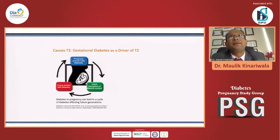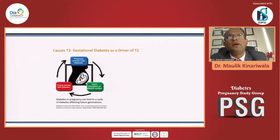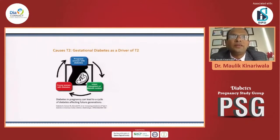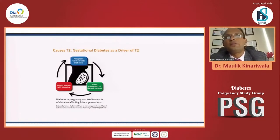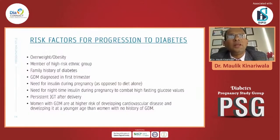Ultimately, GDM acts as a driver of type 2 diabetes. A pregnant woman with diabetes who delivers a baby girl — that girl grows up, becomes a young woman with diabetes, becomes pregnant, and in turn has chances of passing on the risk of diabetes to the third generation. It's a vicious cycle. What are the risk factors for progression to diabetes? Overweight, obesity, strong family history of diabetes, GDM diagnosed in the first trimester.